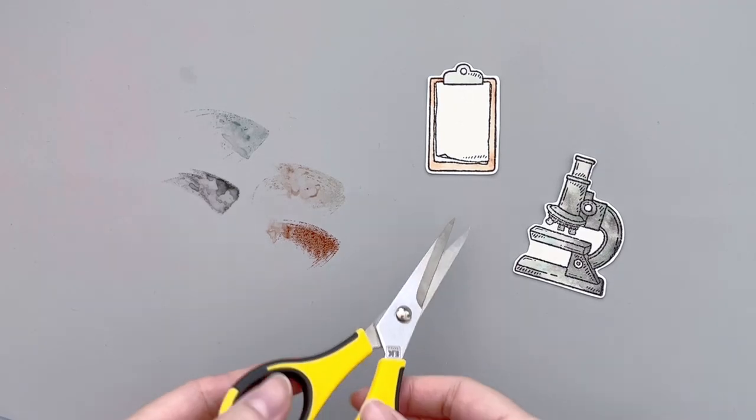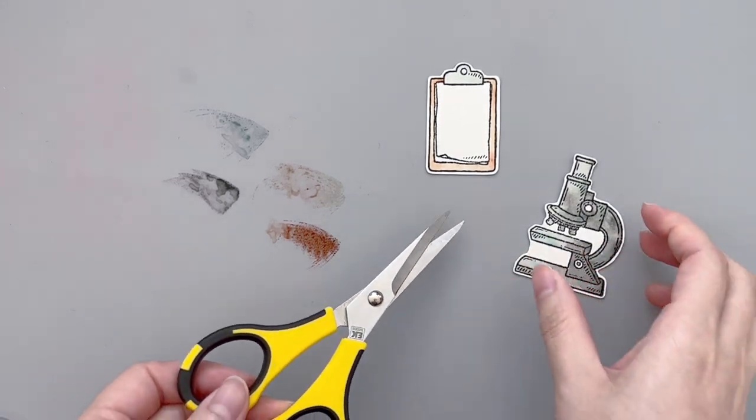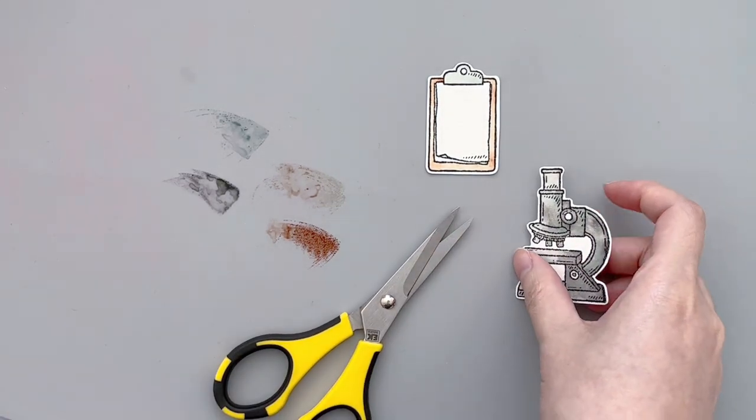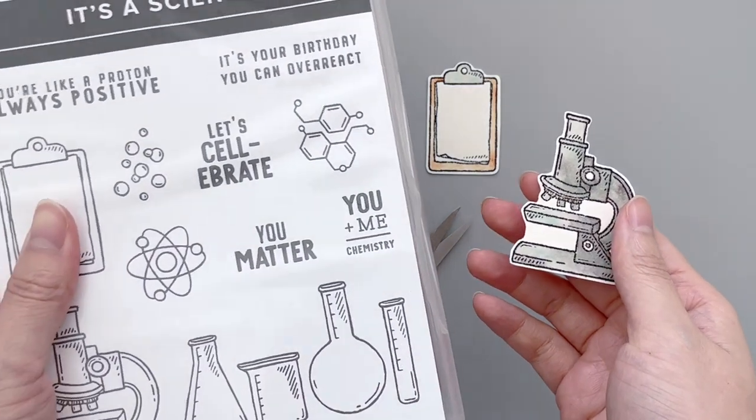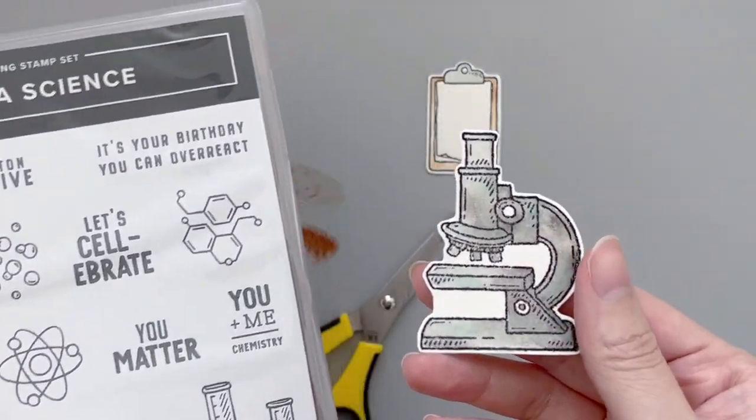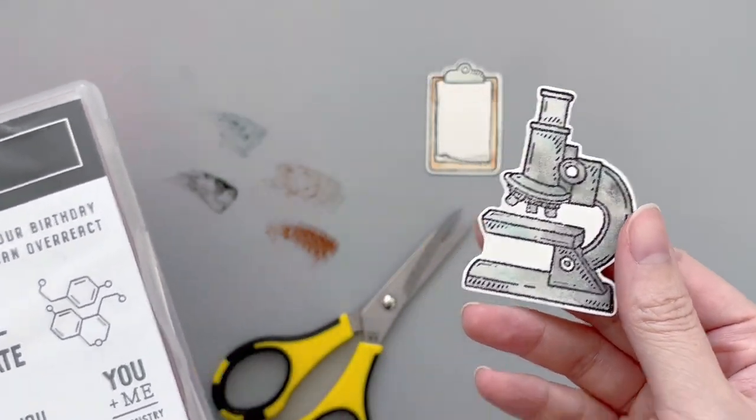After the images are fully dried, I fussy cut them with some scissors and here are the two elements we'll be using today. One is a clipboard and the other is a microscope.